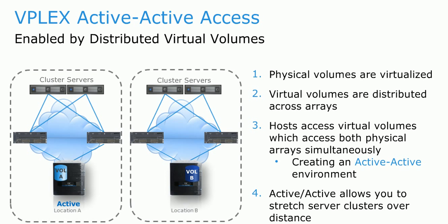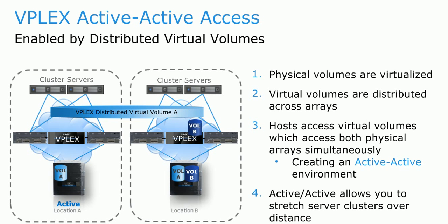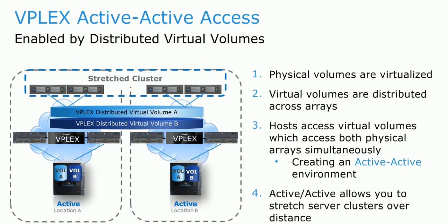Let's look into an example to see how VPLEX works. We have two clusters running applications that could be VMware HA clusters or Oracle RAC. Each of these clusters connects to a single storage array. From this, VPLEX creates virtual volumes that are not tied to a physical array, creating an active-active environment. In this new environment, an entire array can fail without any disruption to the application — their connection to the VPLEX virtual volumes remains intact and users continue to have full read-write access to the data without disruption.